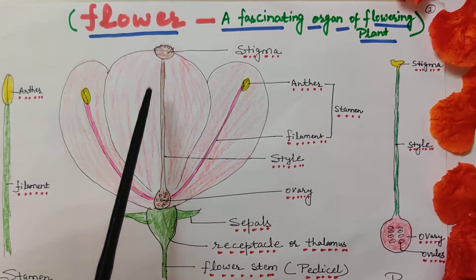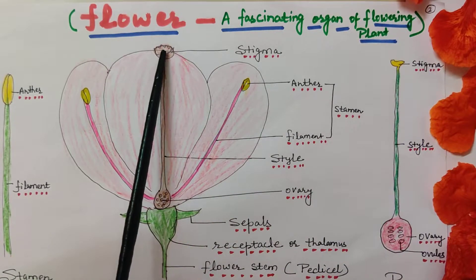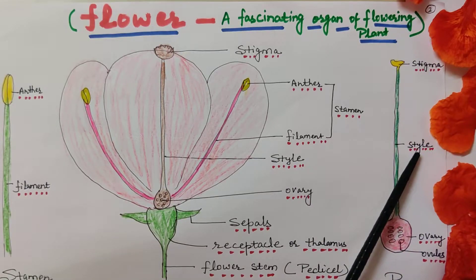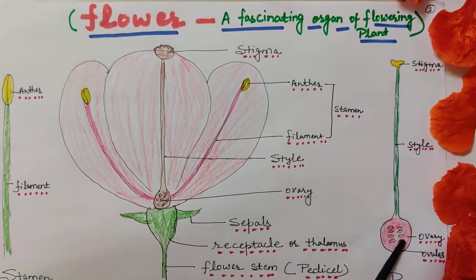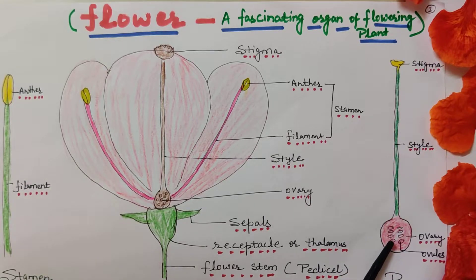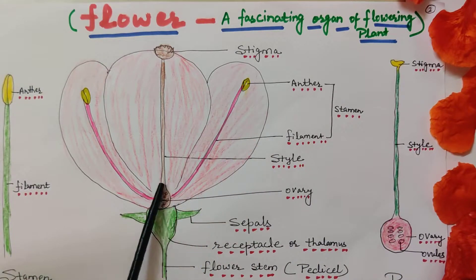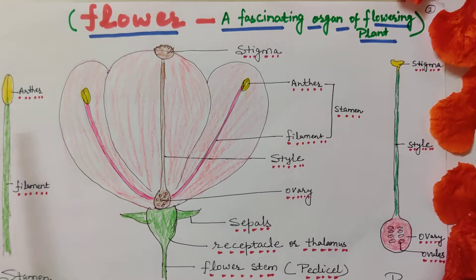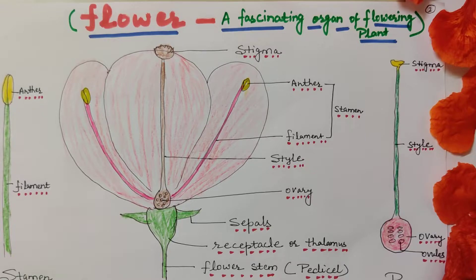The pistil has three parts: the top part is called stigma, the middle part connecting stigma to the ovary is called style, and the basal part is called ovary. Together, stigma, style, and ovary form the pistil or carpel, which is the female reproductive part of the flower. The anther and filament together form the stamen, which is the male reproductive part of a flower.